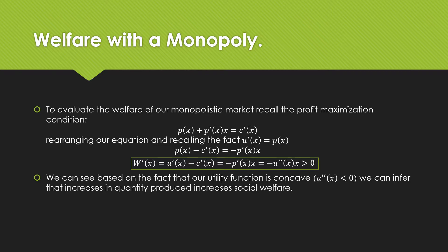So let's talk about evaluating welfare in a monopolistic market. To evaluate this welfare, recall the profit maximization condition. This is where our marginal revenue is equal to our marginal cost. For the monopolist, we end up having the price of good X, which is our inverse demand function, plus the derivative of our inverse demand function times good X, equal to the marginal cost, which is the derivative of our cost function with respect to output X. Rearranging this equation and recalling the fact that U prime is equal to P, we get the following, where with a little bit of rearranging we can identify that